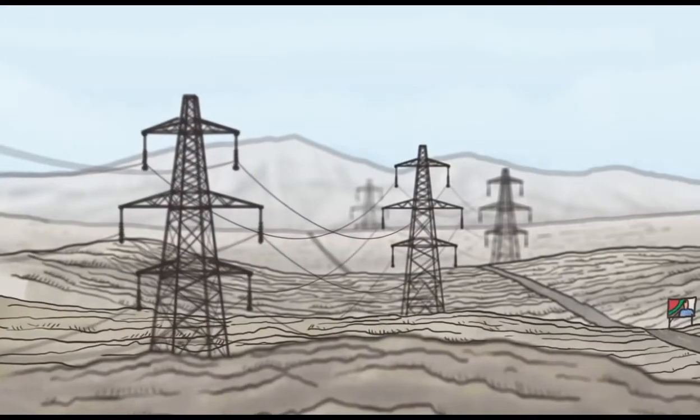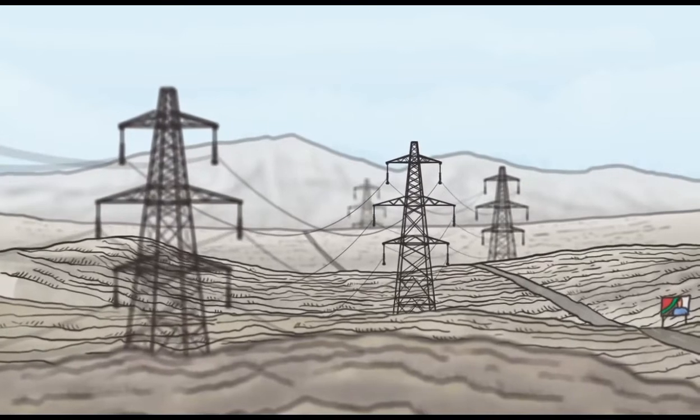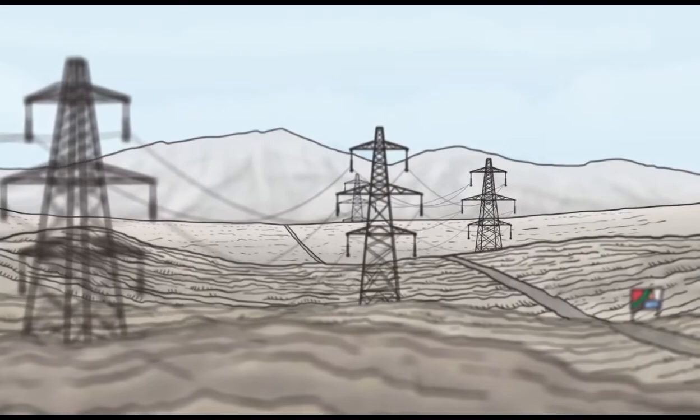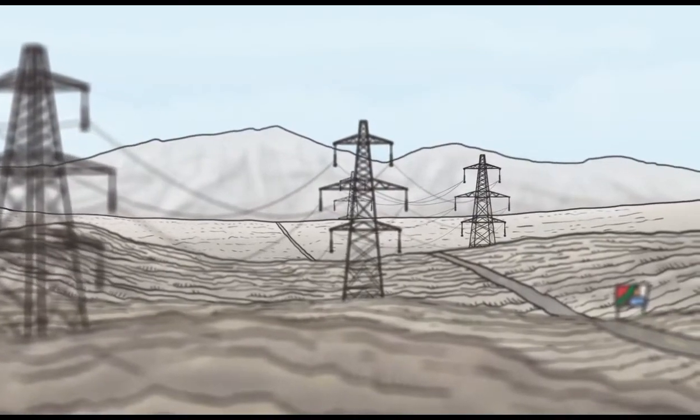Once electricity is generated in the power plant, it is distributed all over Greece through cables, which are found on the transmission line towers. It is through these that it arrives in our houses.